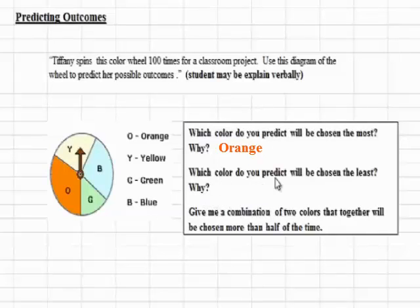The second one says, which color do you predict will be chosen least and why? We have to look for the one that has the smallest piece. Green has the smallest piece, so we can say that most likely it'll be chosen the least if we spin the arrow.